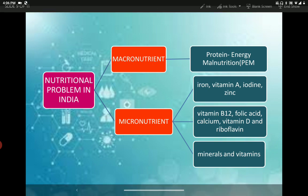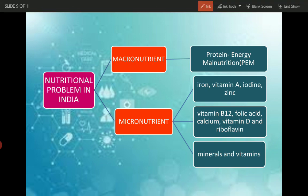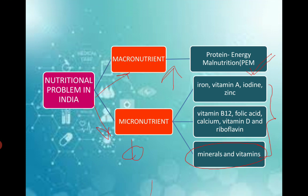Through this chart, we will go through the nutritional problems which are existent. We have two kinds of nutritional problems: macronutrients and micronutrients. Macronutrients are needed in large quantities; micronutrients are needed in very small quantities. For macronutrients, we have protein-energy malnutrition. For micronutrients, we have many: iron, vitamin A, iodine, zinc, vitamin B12, folic acid, calcium, vitamin D, riboflavin. So most of the minerals and vitamins are micronutrients.